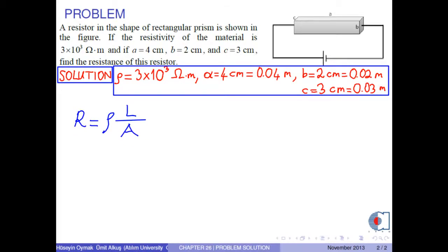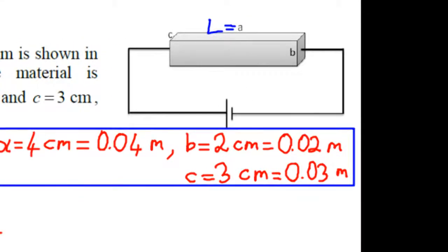Where L is the length of the resistor, which is a in this problem, A is the cross-sectional area through which the current passes, which is b times c in this problem.